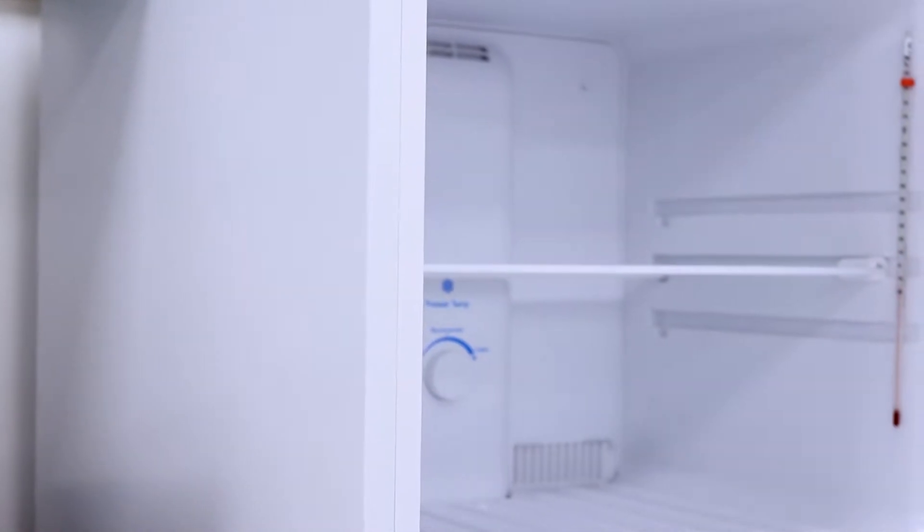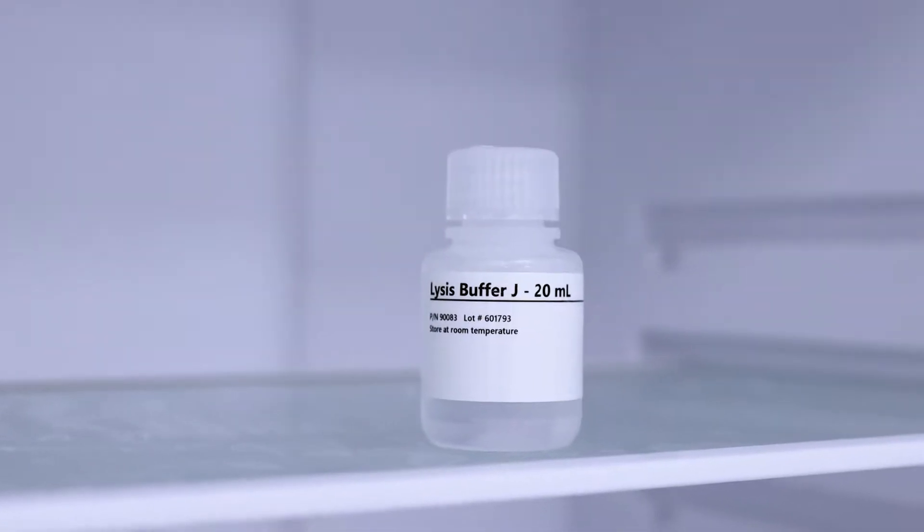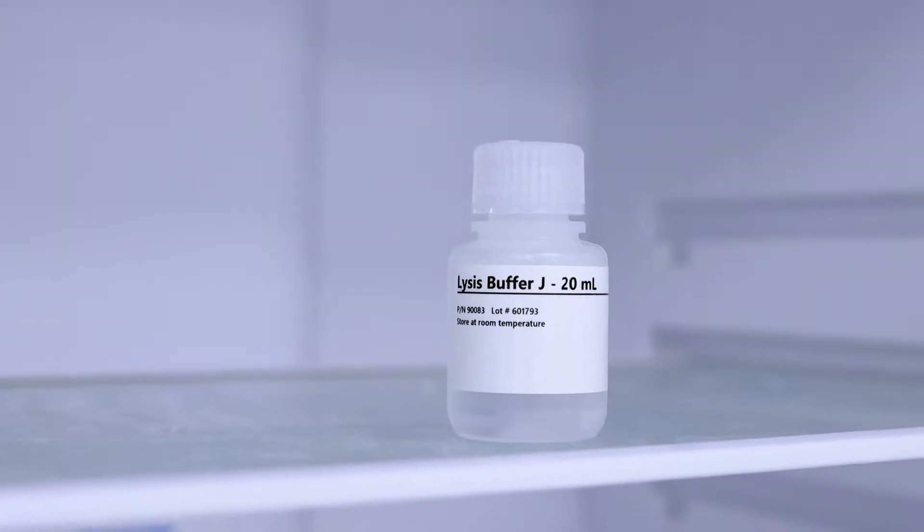Before you begin, make sure to place your Lysis Buffer J in a minus 20 degrees Celsius freezer for 10 to 15 minutes and remove just before use. This is to ensure the separation of cytoplasmic and nuclear RNA.